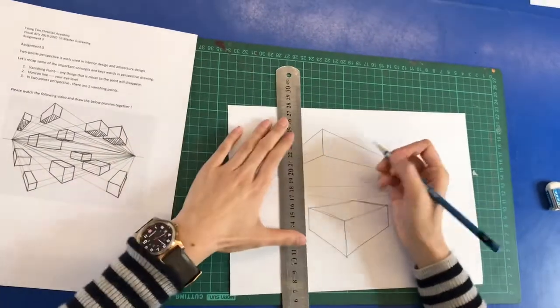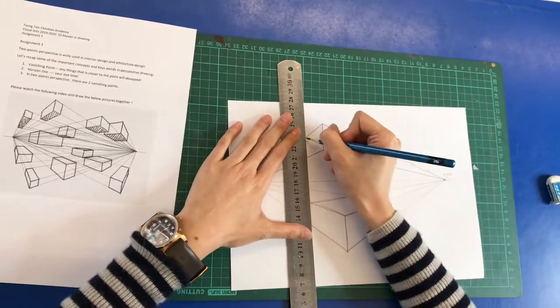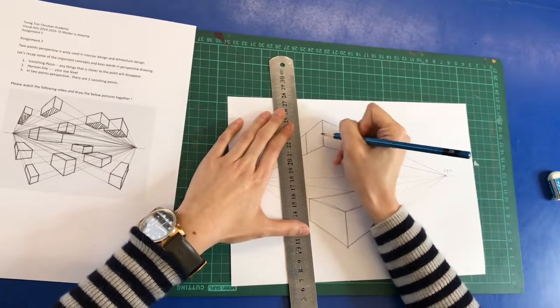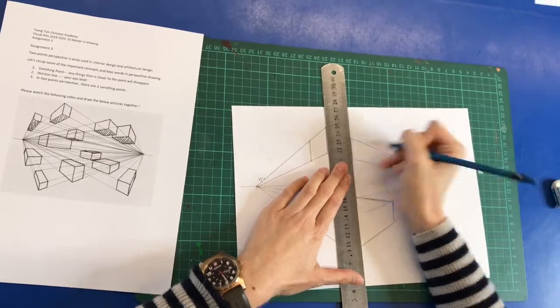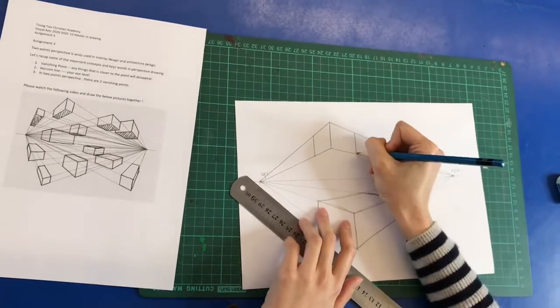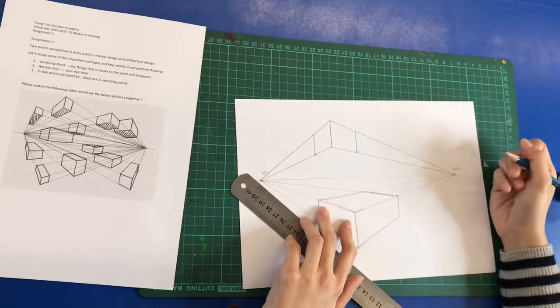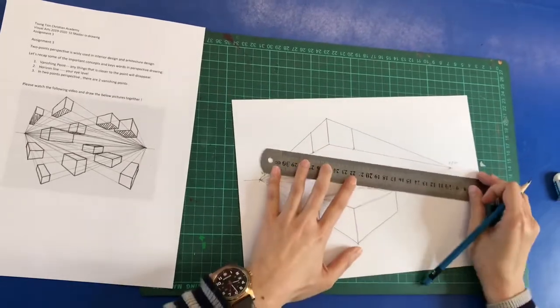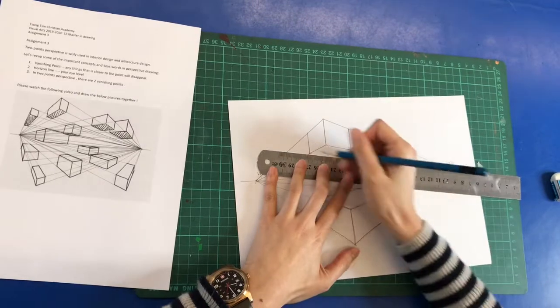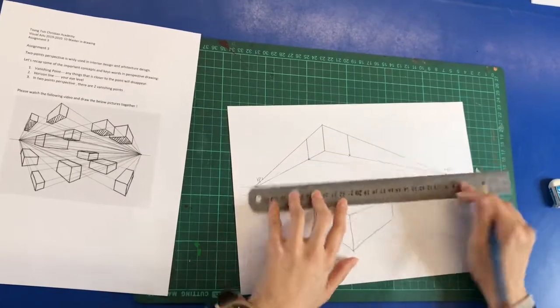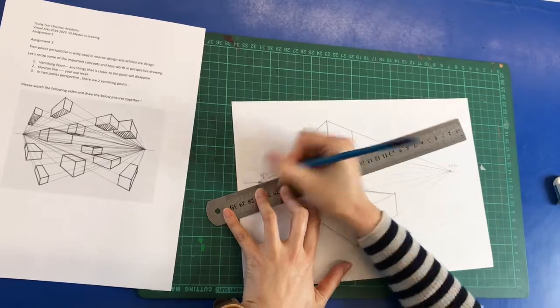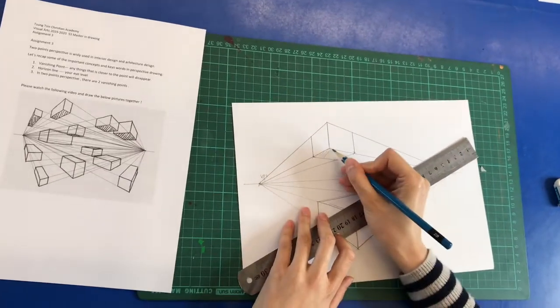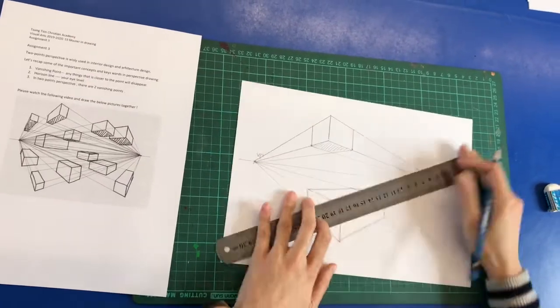So this time I want a smaller one. So the line that I keep at a shorter distance from the middle line. And then here we got the two points to form the bottom. And because it is above the eye level, so this time we will see the bottom of the box.